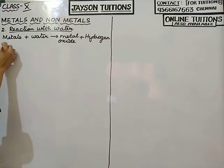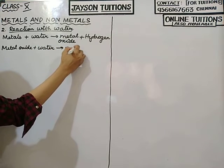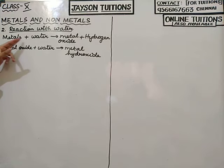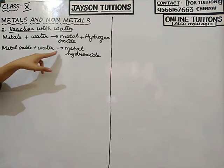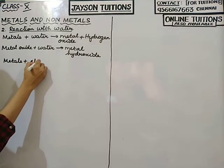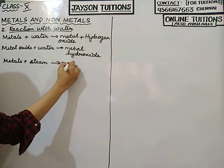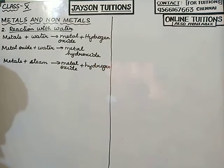This metal oxide can again react with water to form metal hydroxide. So the overall process is: metals react with water to form metal oxide plus hydrogen, and metal oxide plus water forms metal hydroxide. Some metals will not react with water but will react only with steam. When metal reacts with steam, we get metal oxide plus hydrogen.